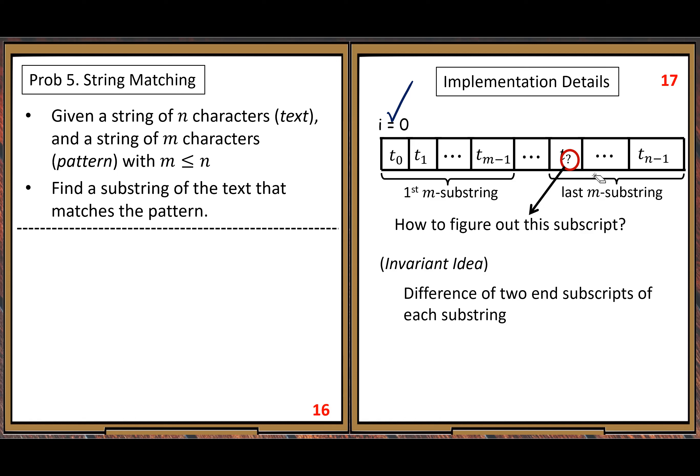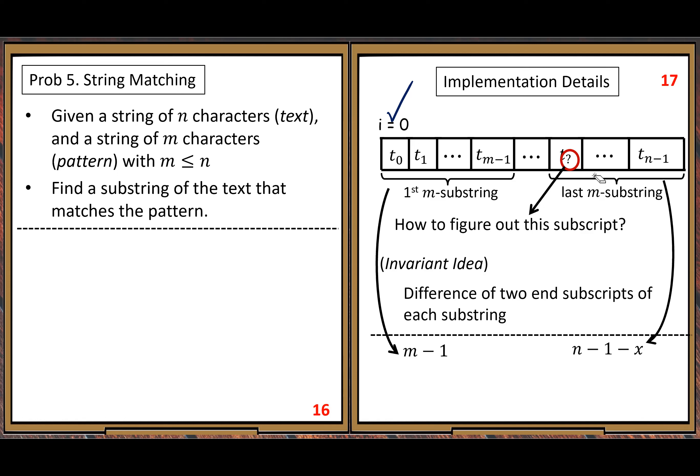So let's use this invariant to keep track of the position of the last m-substring. We set up an equation based on this difference. Left-hand side for the first m-substring: n minus one minus zero, so the difference is m minus one. For the last one, the right-end subscript is n minus one, but we use X to represent the question-mark subscript on the left. That difference is n minus one minus X. We set up this equation and solve for X. The answer is X equals n minus m.